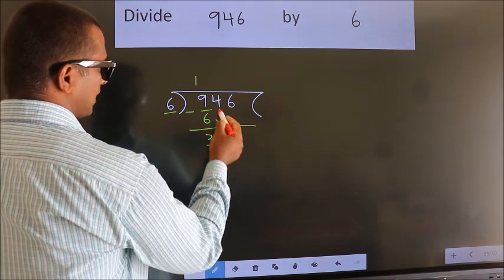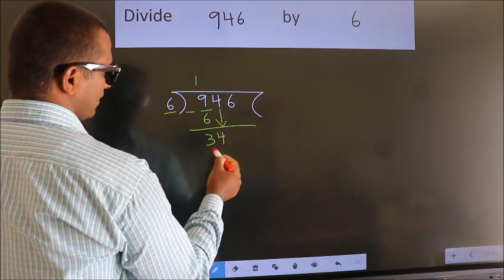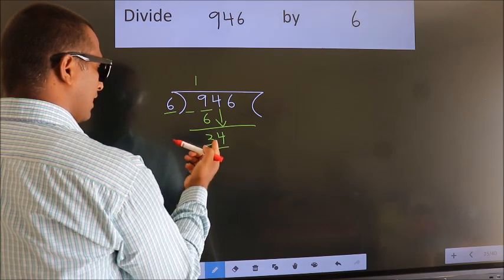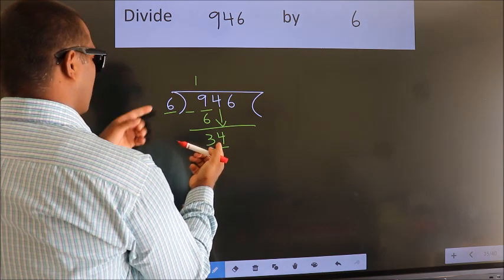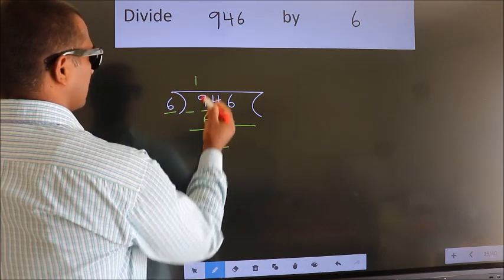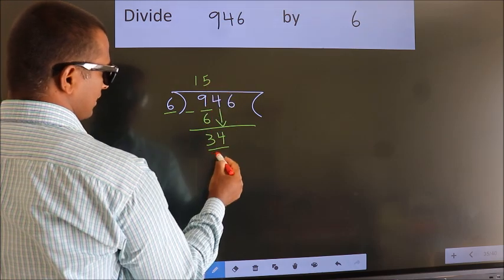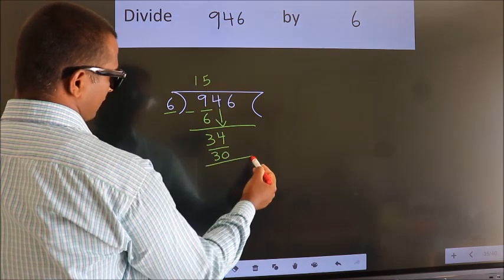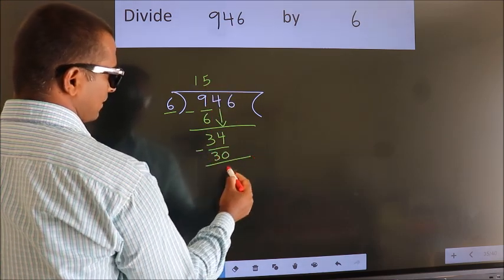bring down the beside number. 4 down. So, 34. A number close to 34 in 6 table is 6 fives 30. Now we subtract. We get 4.